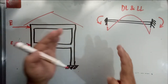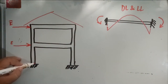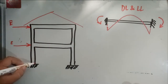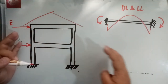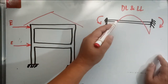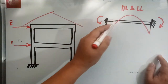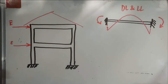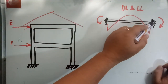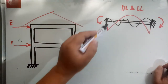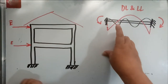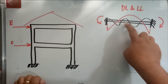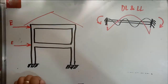When earthquake load hits, the frame sways back and forth. As the frame moves, the stresses in the members may reverse. The moment diagram can flip, meaning a region that was in tension could become compression at a certain moment in time - this is called stress reversal.